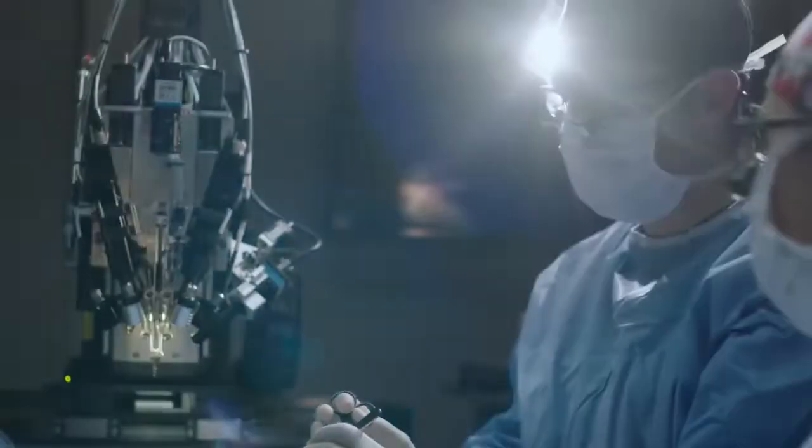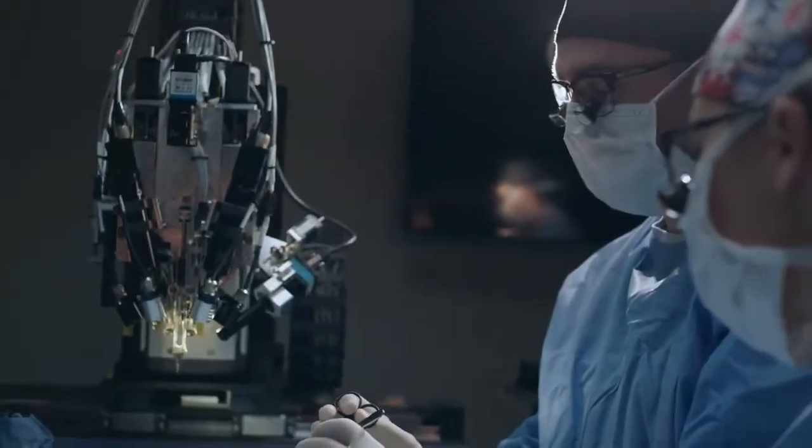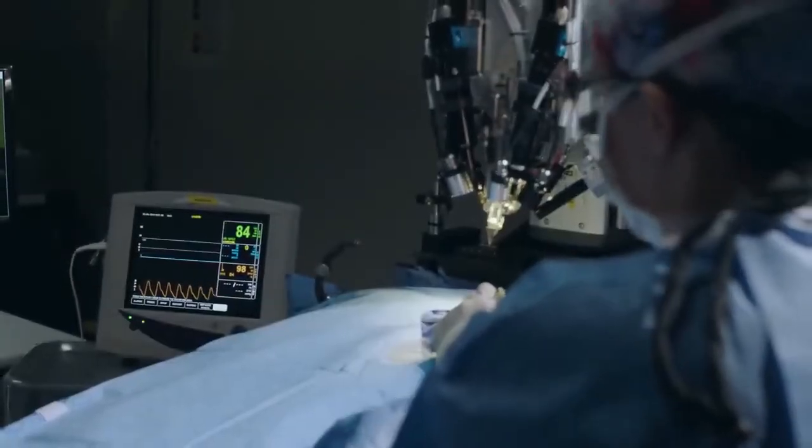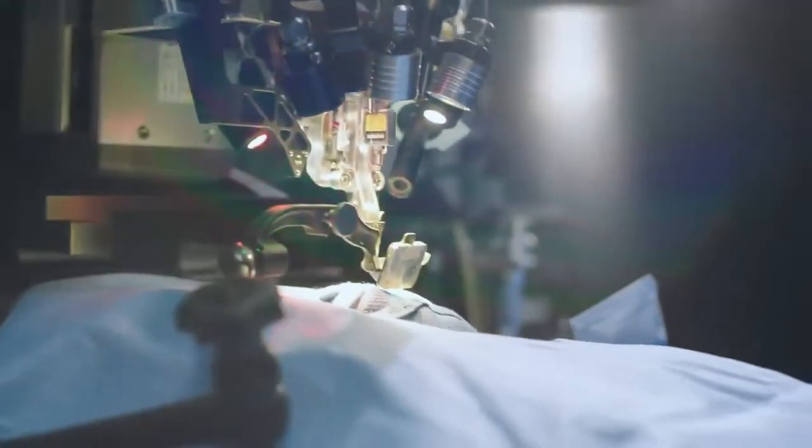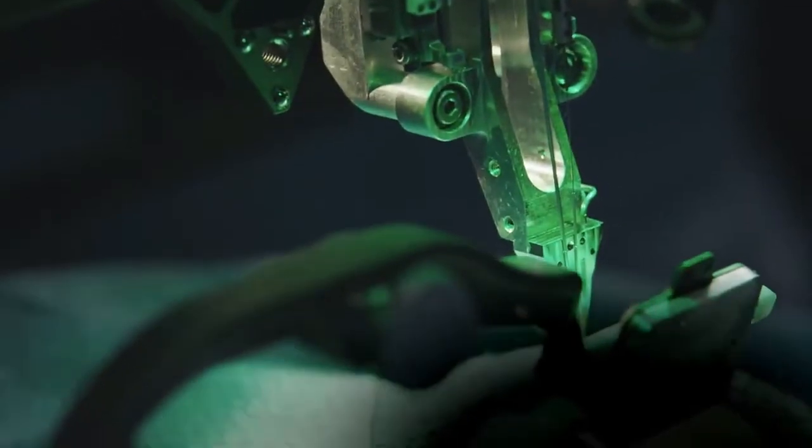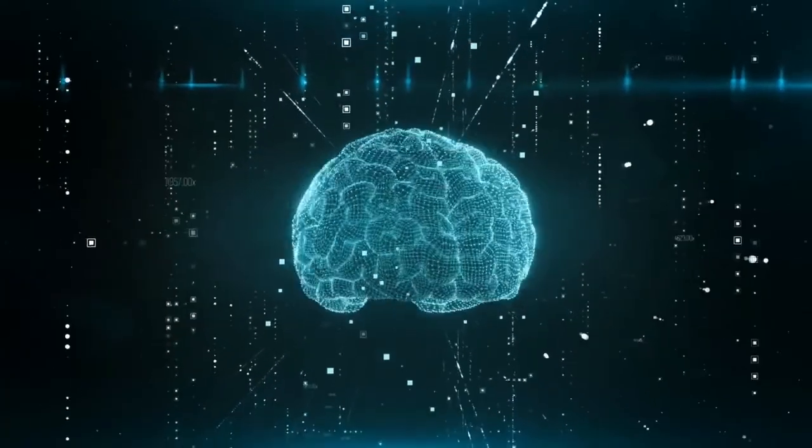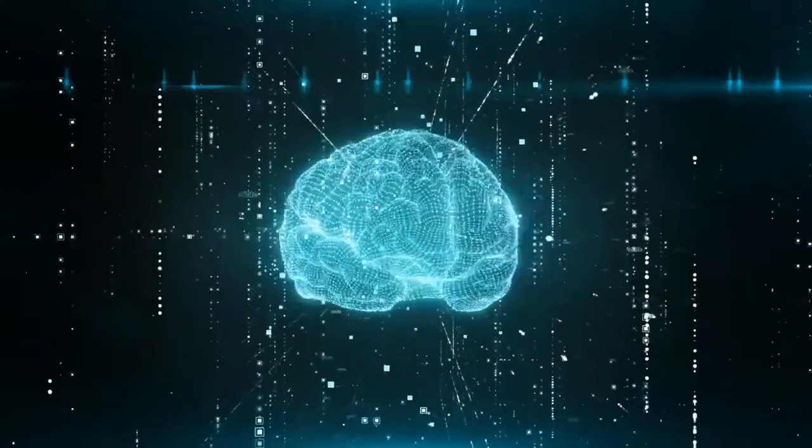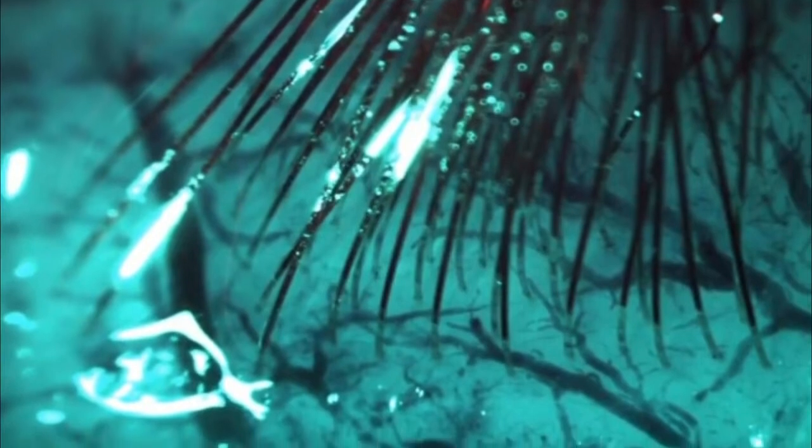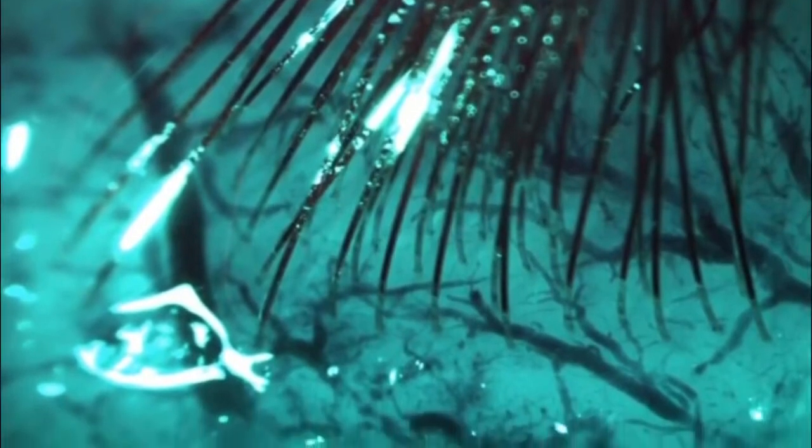The Neuralink robot inserts a module into your brain using a microscope and a 24 micron needle. One micron is one millionth of a meter. These needles are so small that you cannot easily see them with the naked eye. According to the company, 10,000 electrodes can be placed in the brain. The robot aims to ensure that the device is inserted into the brain without touching a blood vessel or artery. Each electrode is placed separately, passing through each type of blood vessel.